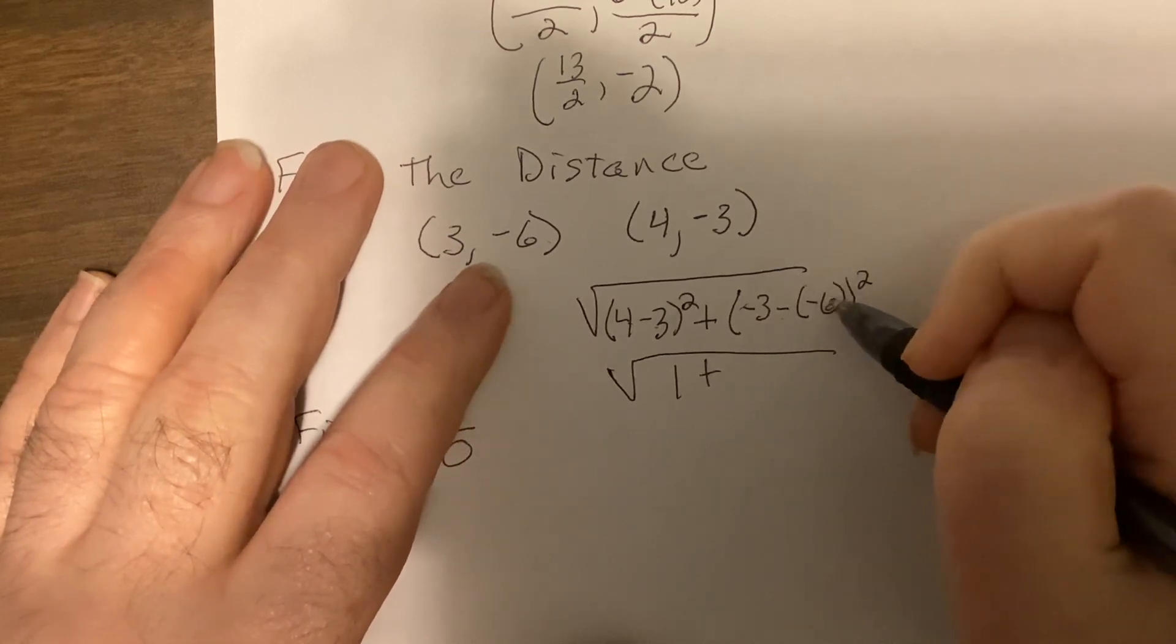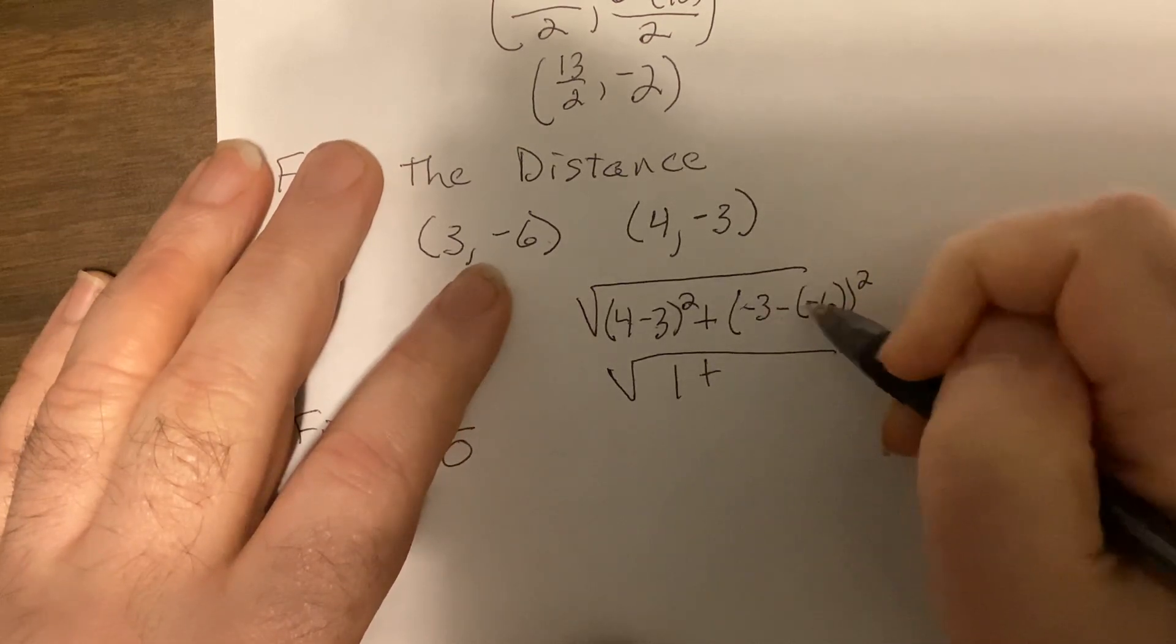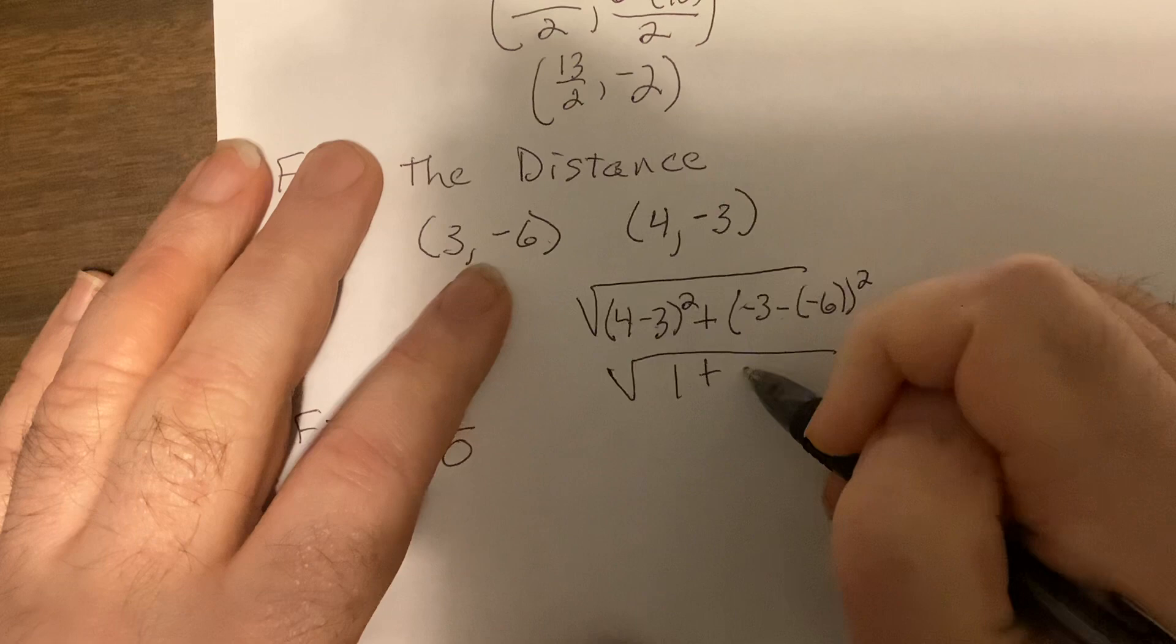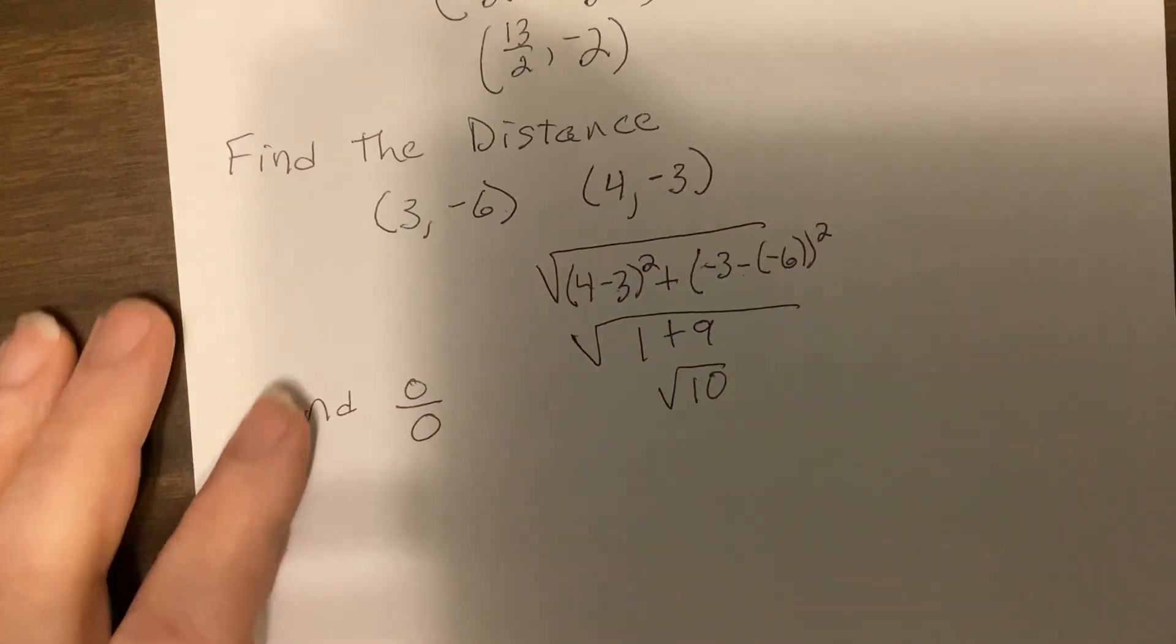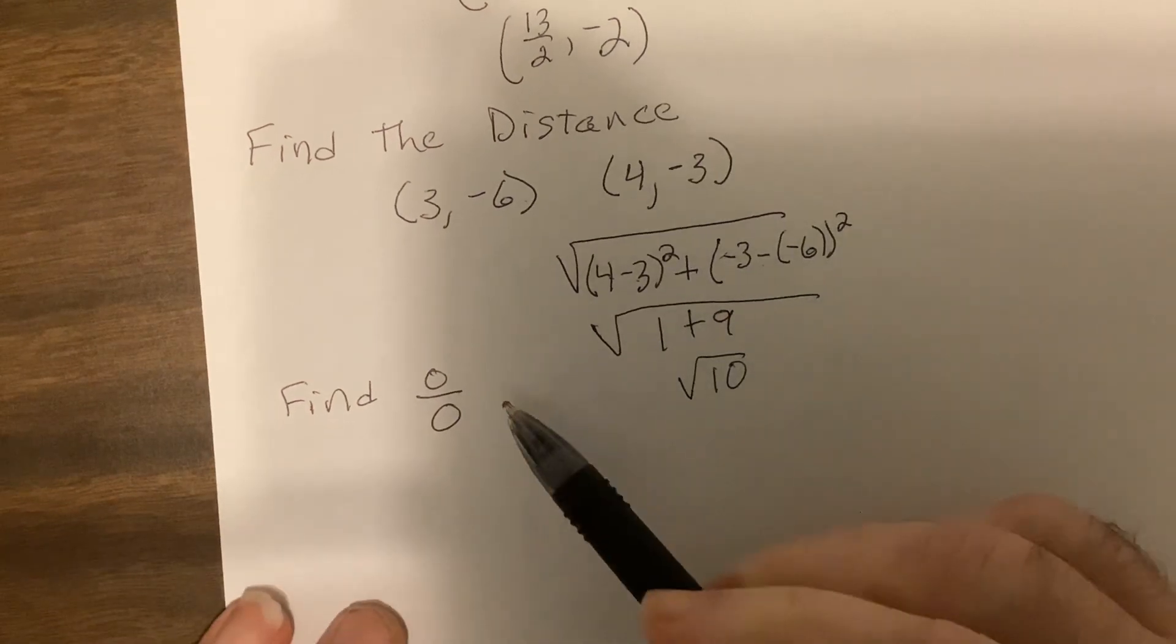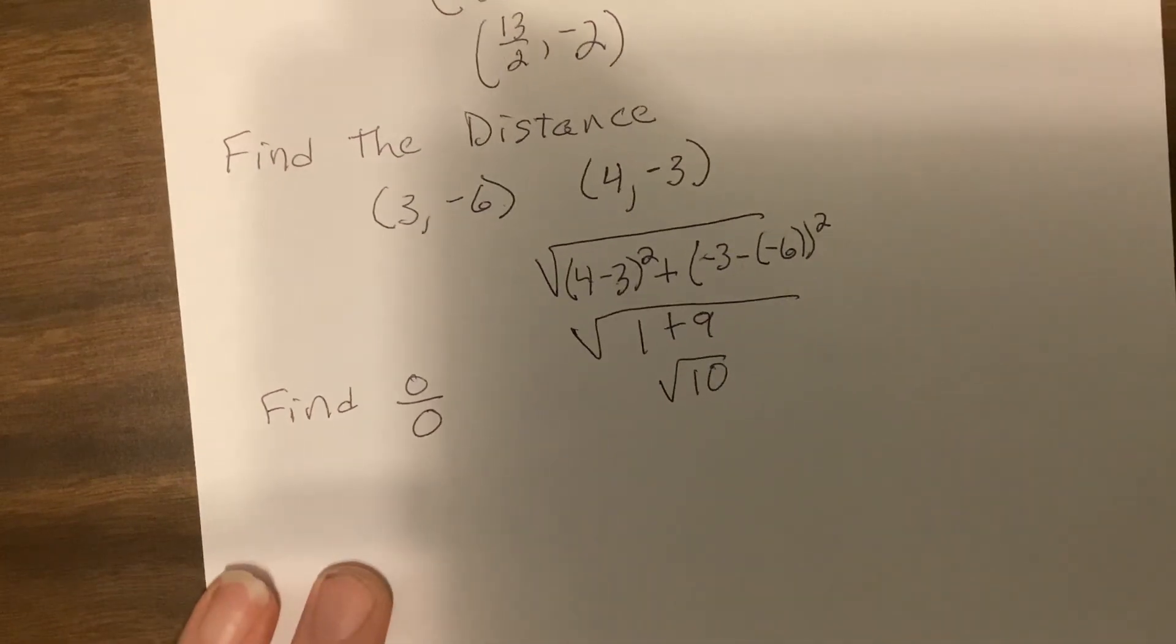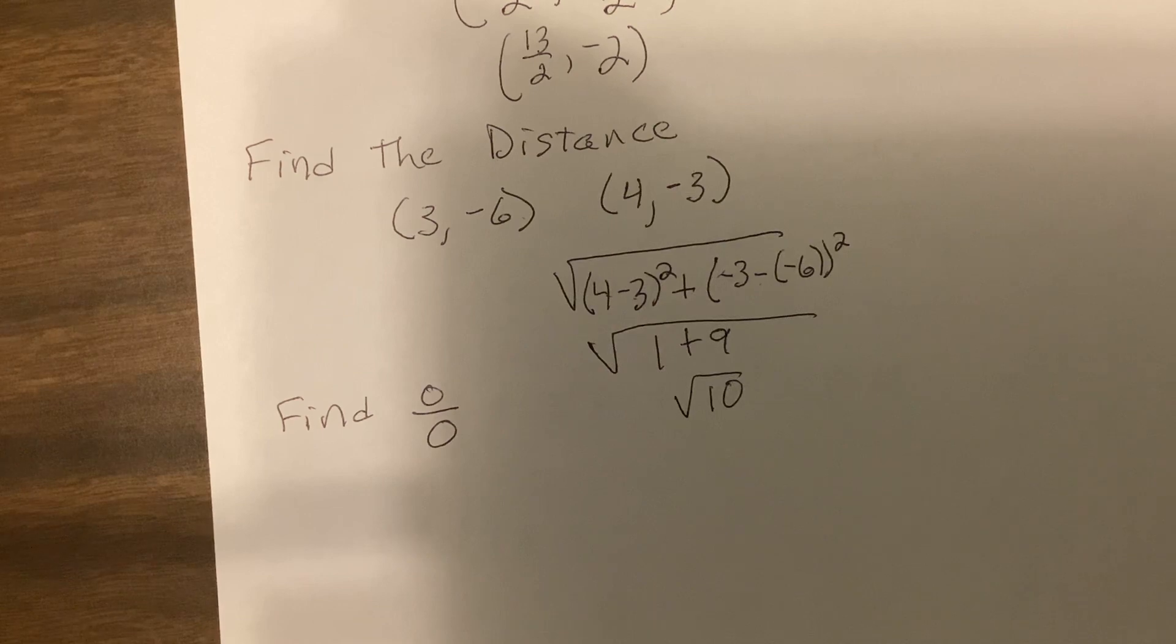Plus six would be negative three plus six is three, squared is nine. So that'd be the square root of ten. And the last one, oh no, what is it? If zero's on the bottom, it's undefined.